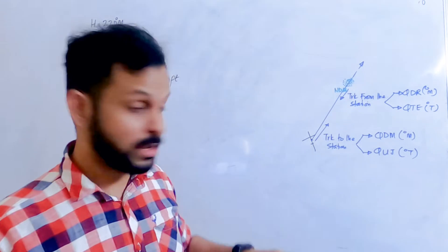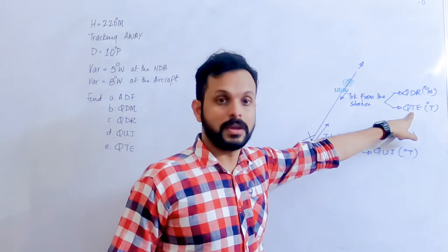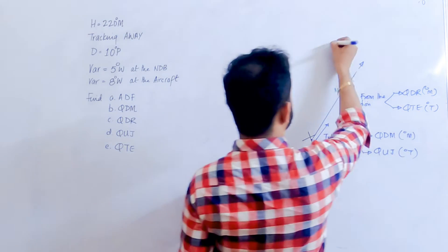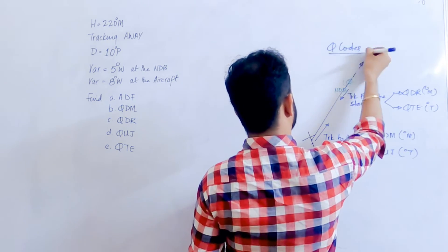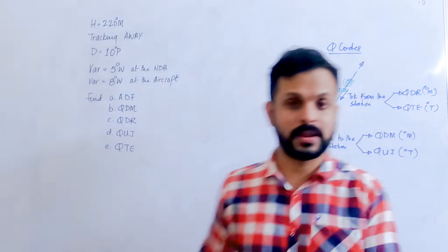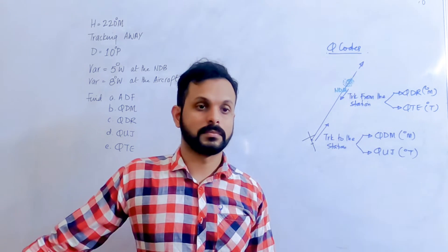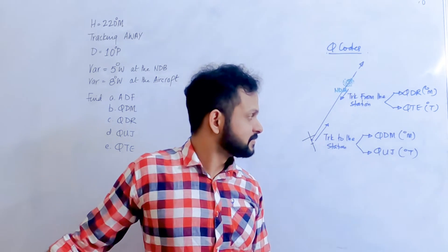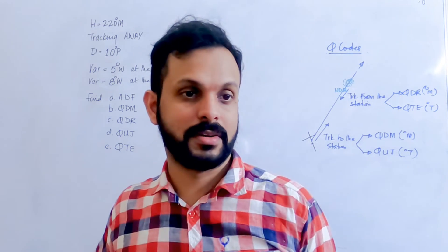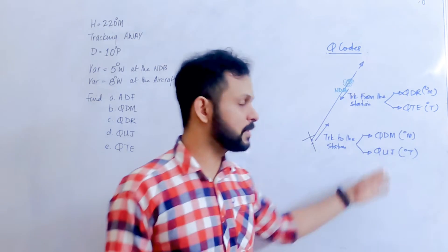For tracking purposes you need QDM — magnetic track to the station. For plotting purposes you need QT — true track from the station back to the aircraft. QUJ is true track to the station, and QUG is true track from the aircraft to the station. Remember: QT and QDR are 'from'; QDM and QUJ are 'to' the station.